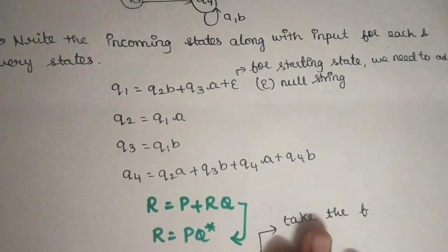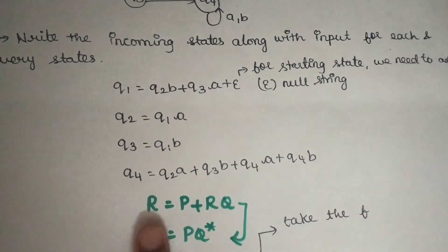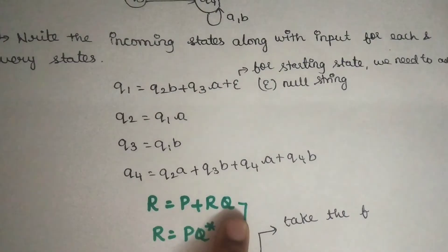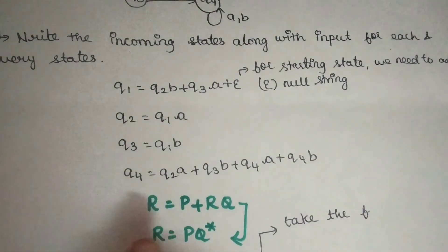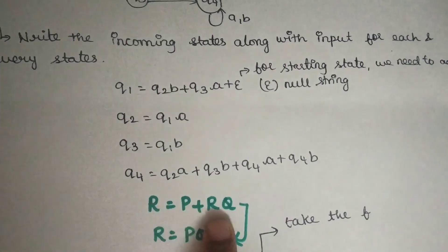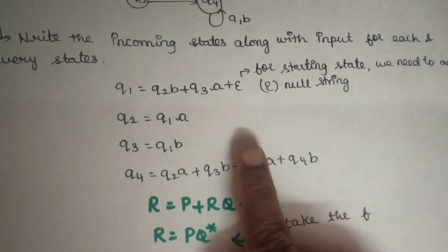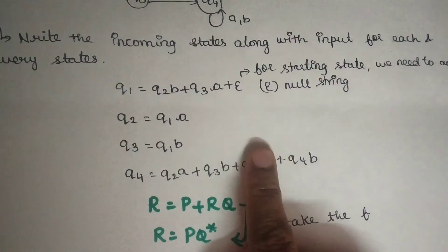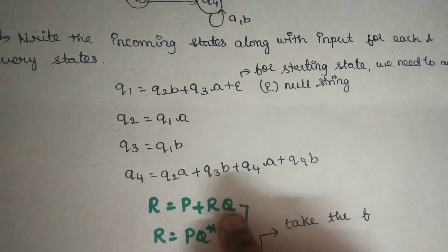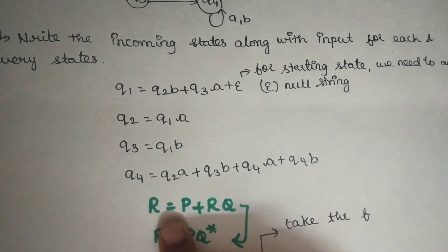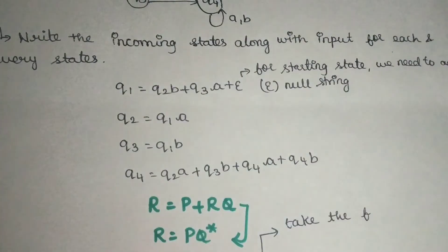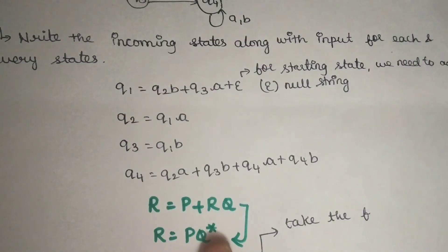Q4A plus Q4B — A input is Q4A. So I have completed the first step. In all states, incoming states along with the input form the equations. Now how can I convert these to regular expressions? R equals P plus RQ — I will change the equations to this form.